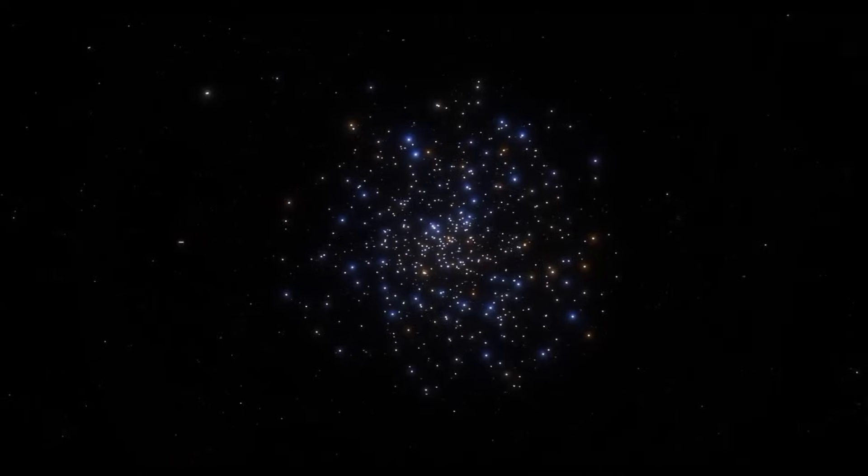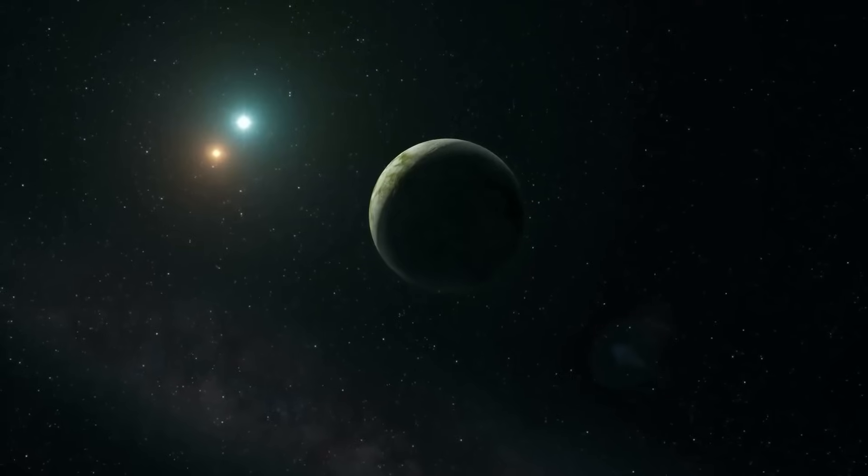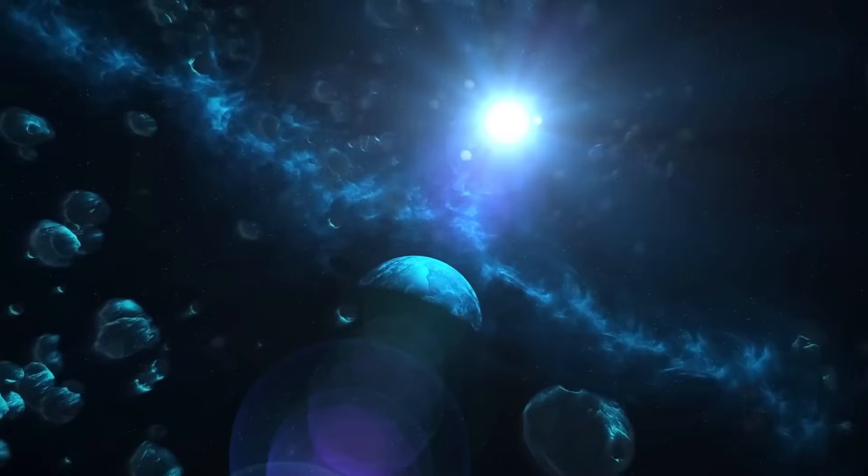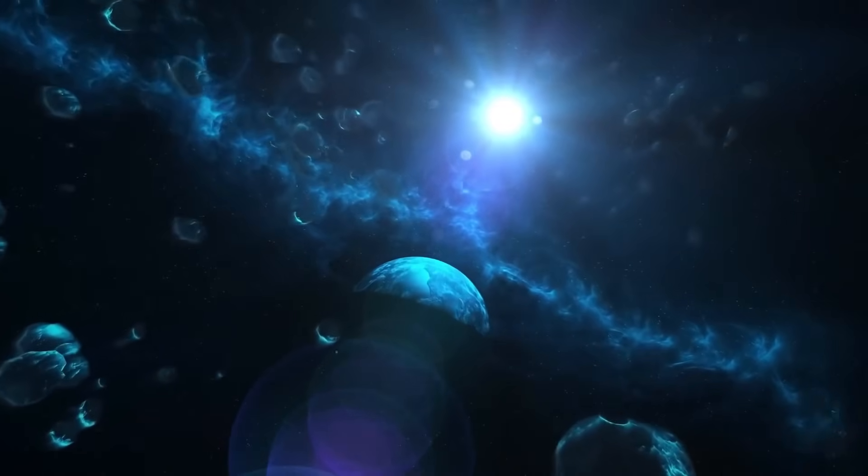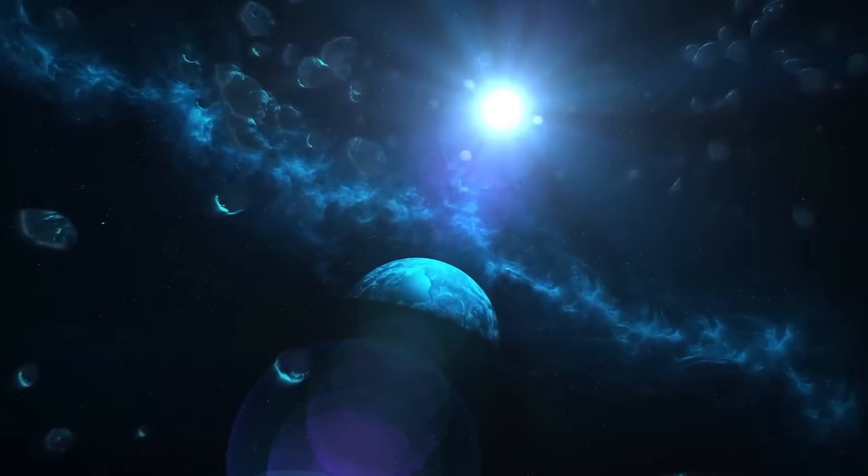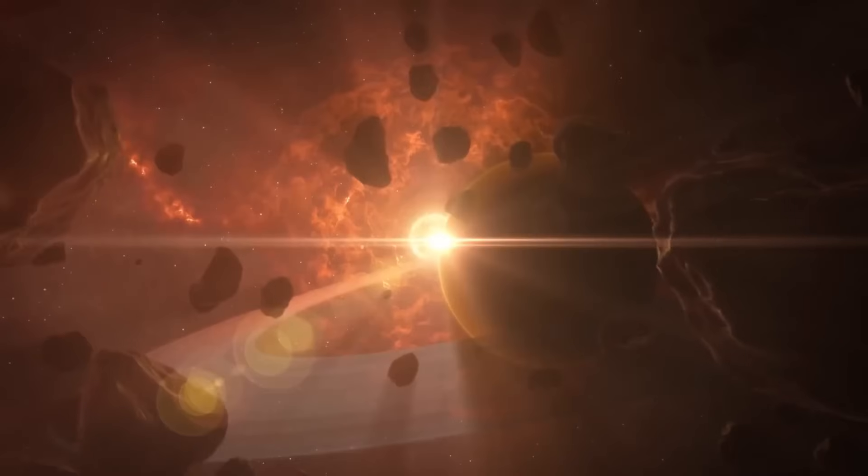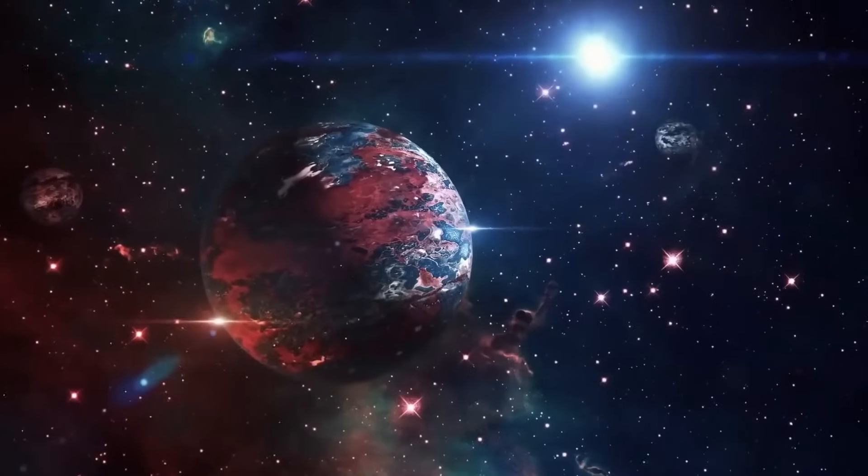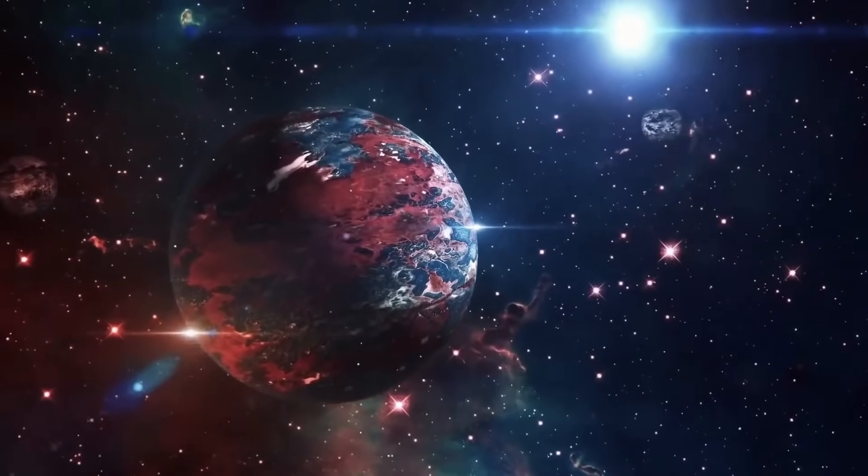One of the most discussed exoplanets for a long time is Proxima b, which is only 4.2 light-years away. It is almost as big as Earth and is located in the so-called habitable zone, where liquid water may theoretically exist. Up until now, it was all numbers - orbital speed, mass, and distance.